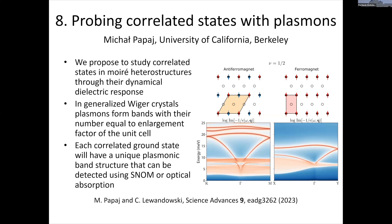My name is Miho Papaj and I'm a postdoc at UC Berkeley. I would like to show how we can use plasmons — the collective excitations of interacting electrons — to probe the nature of correlated states in moiré heterostructures. The details of the dynamical dielectric response, in particular plasmons, can reveal a lot about the nature of the Wigner crystal that occurs in moiré TMD hetero-bilayers, and can also reveal the magnetic structure.